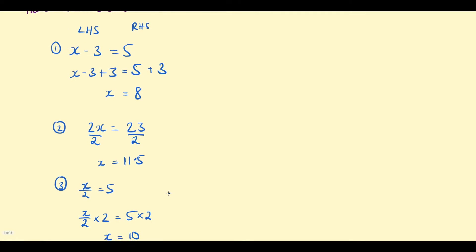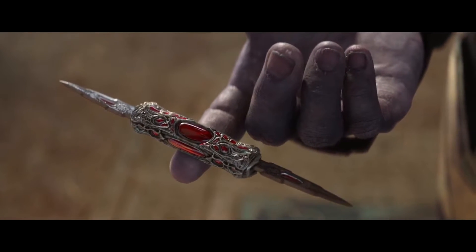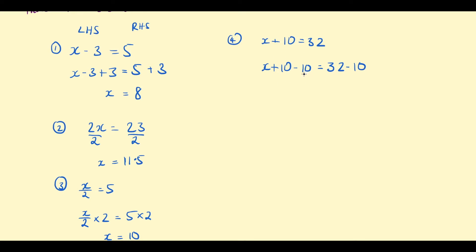So, that's the inverse operation for subtraction, multiplication, and division. Now let's look at addition. You might have something like x plus 10 equal to 32. The inverse of addition is subtraction, just like the inverse of subtraction was addition. So we want to subtract 10 from the left-hand side: x plus 10 take 10. And we also need to subtract 10 from the right-hand side as well. Whatever we do to the left, we do to the right to keep things balanced. Plus 10 take 10 is 0, so we're just left with x on the left-hand side. On the right, 32 take 10 is 22. We have our answer of x equal to 22.